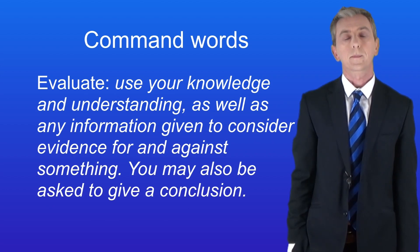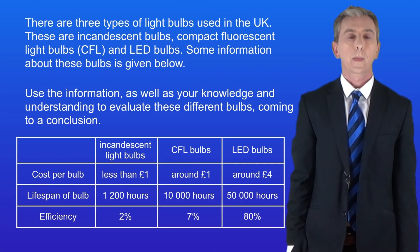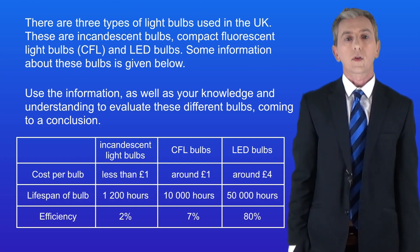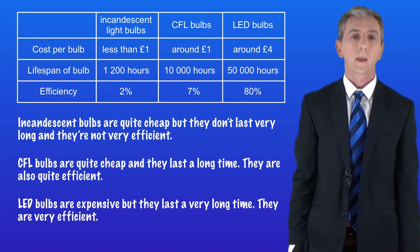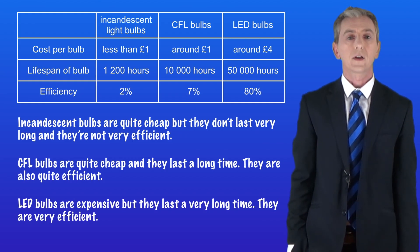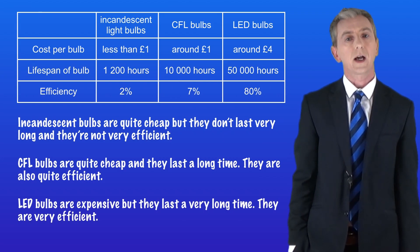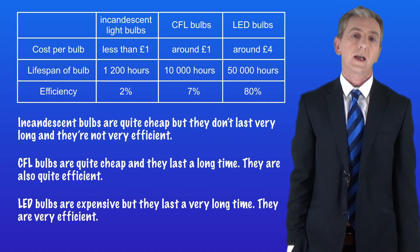This example is about different types of light bulbs. There are three types used in the UK: incandescent bulbs, compact fluorescent light bulbs (CFL), and LED bulbs. Use the information, as well as your knowledge and understanding, to evaluate these different bulbs and come to a conclusion. Here's the first typical answer: incandescent bulbs are quite cheap but don't last very long and aren't very efficient. CFL bulbs are quite cheap and last a long time, and are also quite efficient. LED bulbs are expensive but last a very long time and are very efficient. This is a weak answer because it does not really compare the different types of bulbs — each bulb is simply described, not compared. It doesn't use any data from the table and does not come to any conclusion.